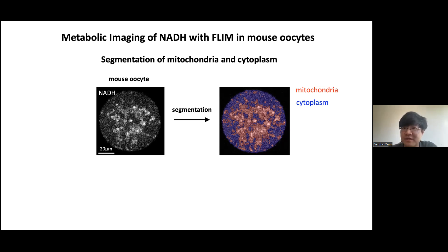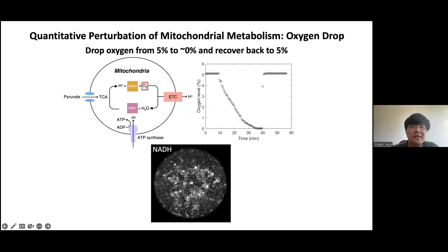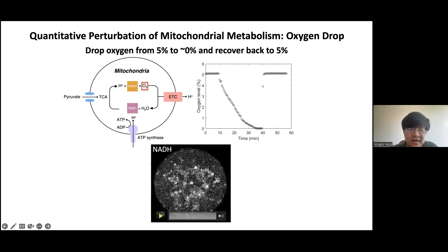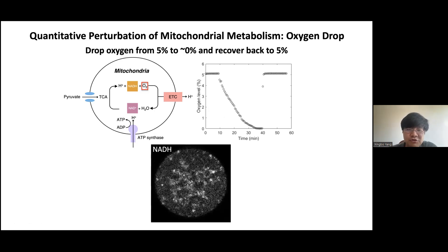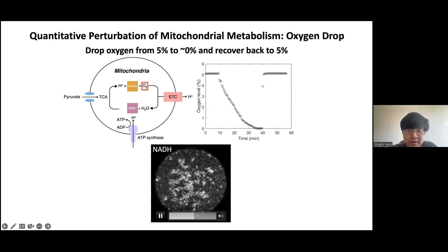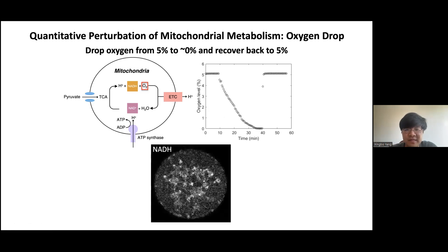Now that we've established the parameters measurable by FLIM, the next question is how sensitive are the FLIM parameters to metabolic variations for mitochondrial metabolism. We perform quantitative perturbation of mitochondrial metabolism by dropping oxygen, which is a very important substrate for respiration. We continuously change the oxygen level inside the chamber where we culture our oocytes, dropping it slowly from about 5% partial pressure to almost zero — hypoxia — over about 30 minutes, then quickly recovering it. This is a reversible, quantitative perturbation. Watching the NADH intensity response in a movie: as I drop oxygen, you can see the mitochondrial pixels brighten up, and when I recover oxygen, the response reverses.